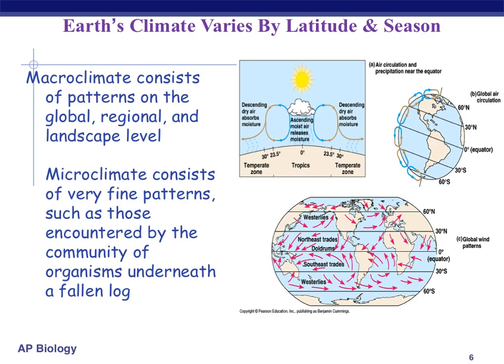Whereas macroclimate would be more like the climate that Mesquite as a whole is experiencing — all of the organisms living there experiencing this widespread type of climate. So we have to think about both the macro and micro level of climate and how those things would affect our biotic factors.